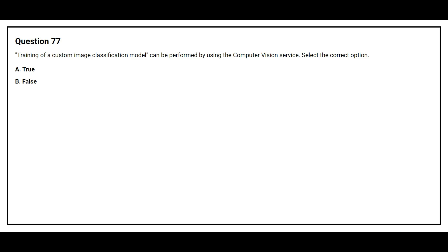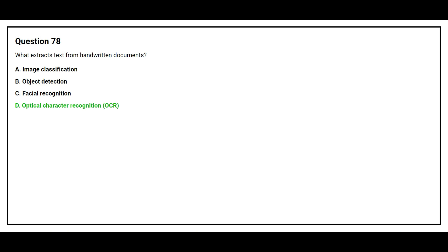Question number 77. Training of a custom image classification model can be performed by using the Computer Vision service. Option A: True. Option B: False. The correct answer is Option B, False. Question number 78. What extracts text from handwritten documents? Option A: Image Classification. Option B: Object Detection. Option C: Facial Recognition. Option D: Optical Character Recognition. The correct answer is Option D, Optical Character Recognition.